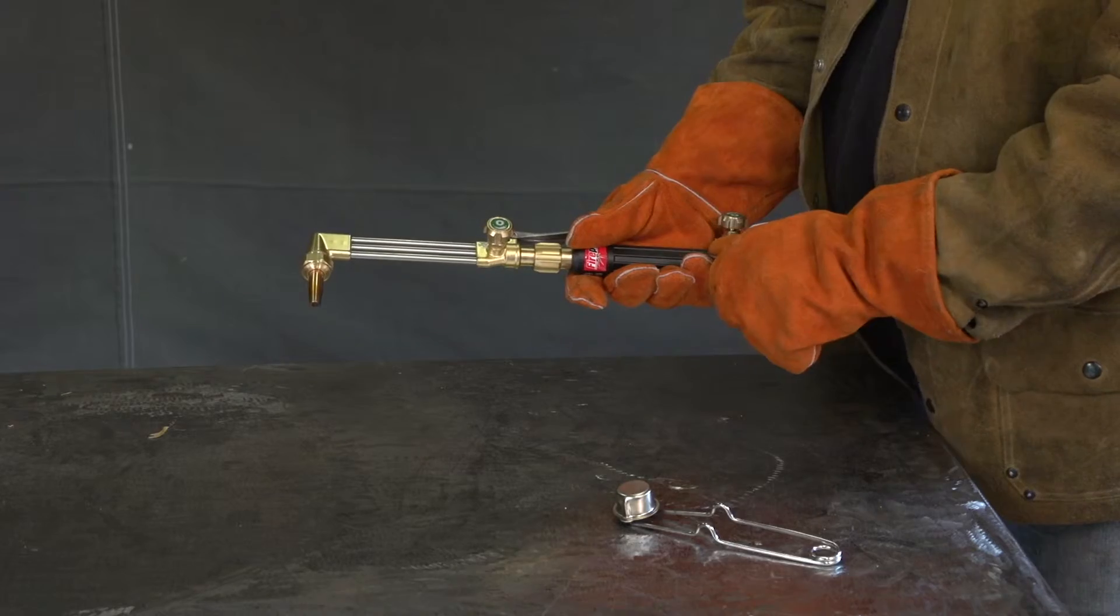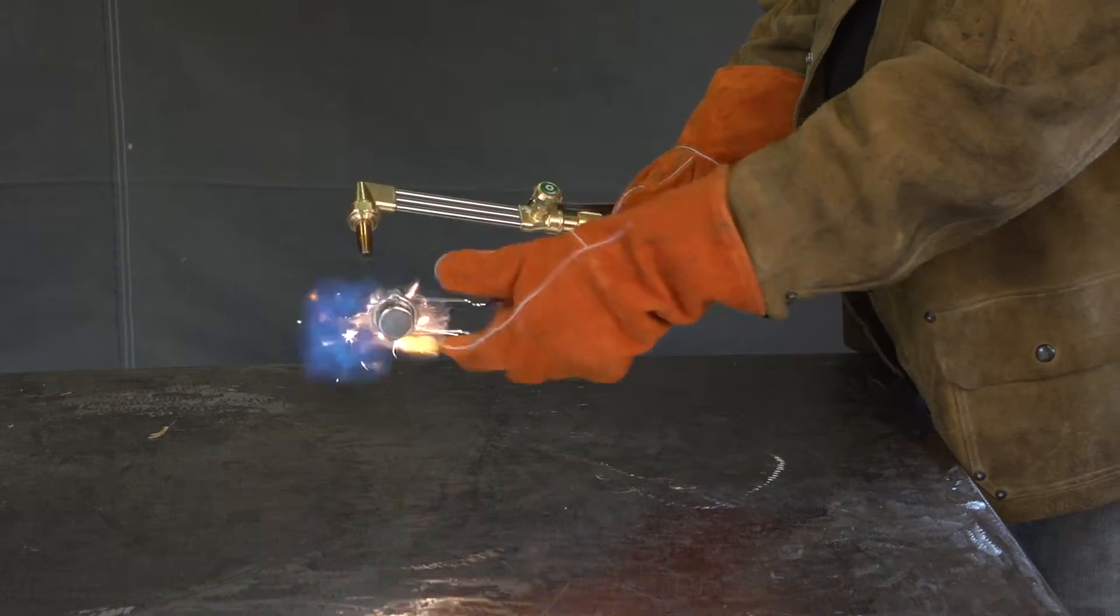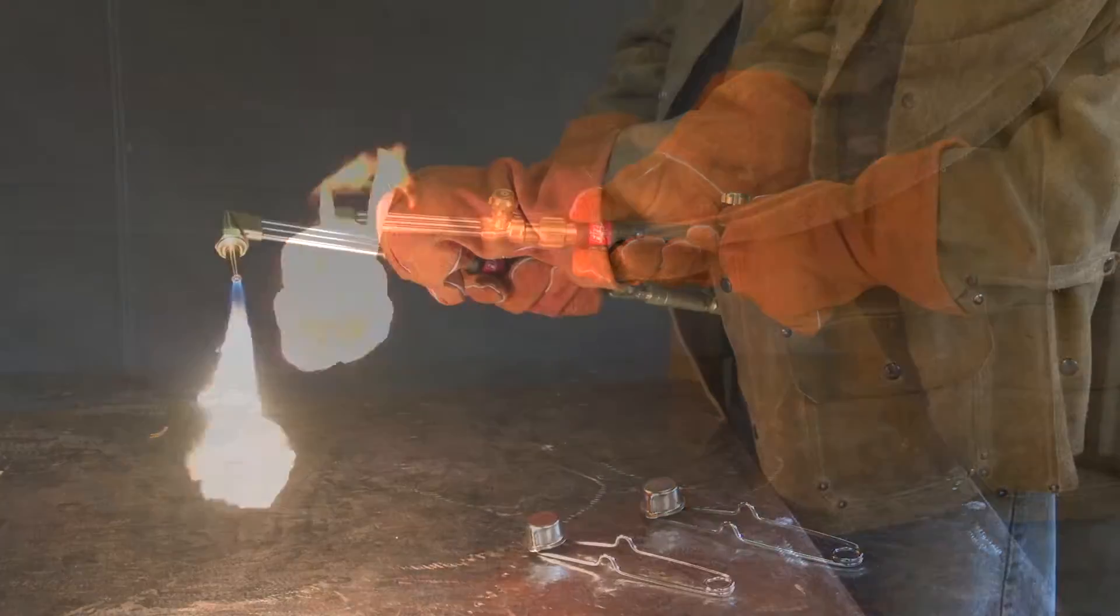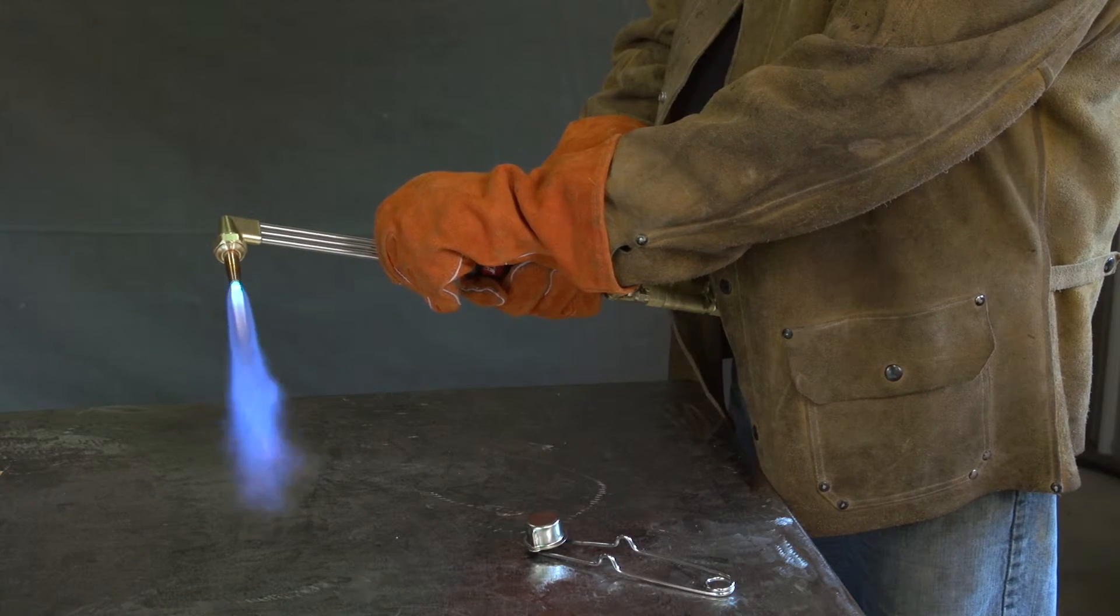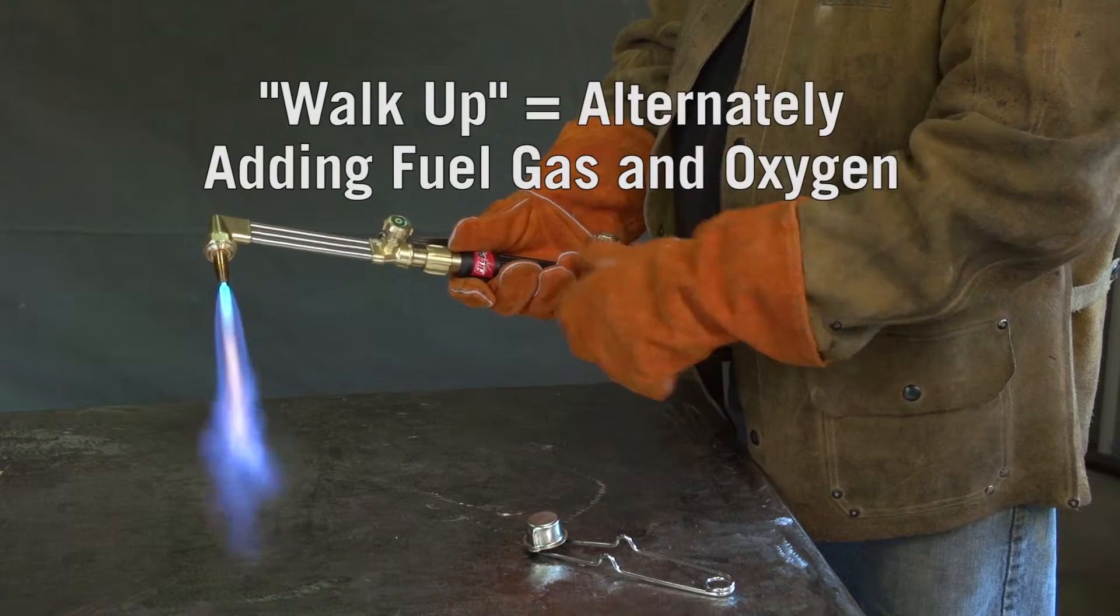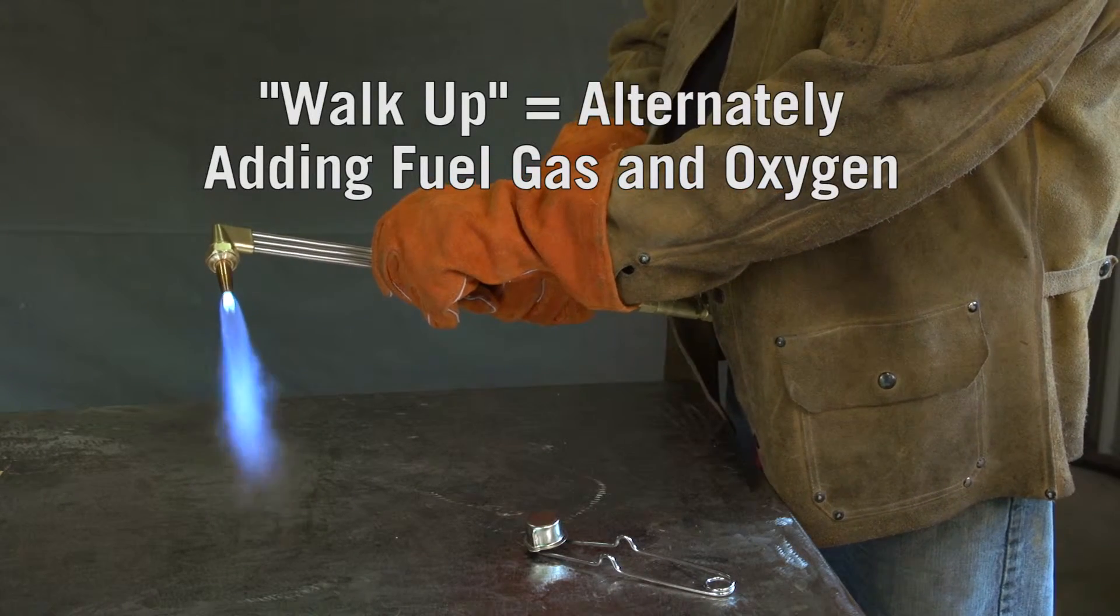Technique 1. Turn the fuel valve one-quarter turn and light. Then, turn the oxygen preheat valve one-quarter to one-half turn and walk up the flame.